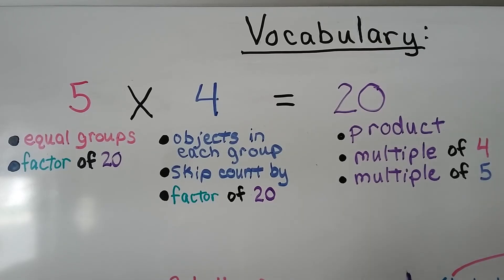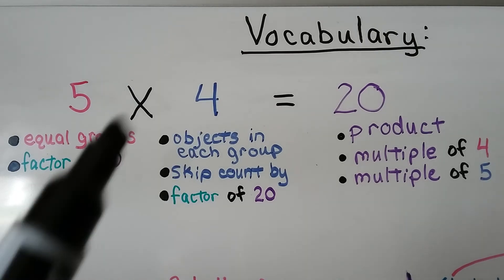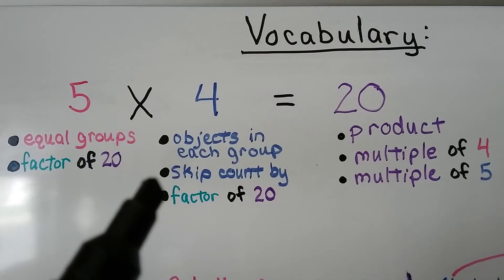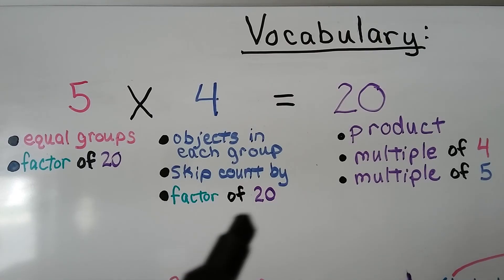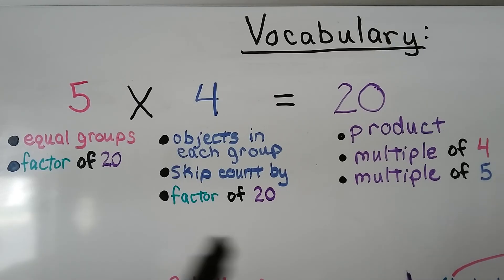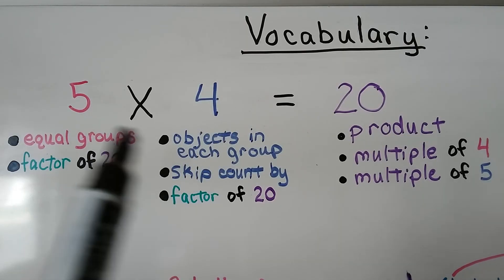Remember, the first number in a multiplication sentence is the equal groups — it's a factor of the product. The second number is how many objects are in each group, and that's the number we skip count by — that's also a factor of the product. Both of these are factors of the answer, the product. And the product is a multiple of both factors.